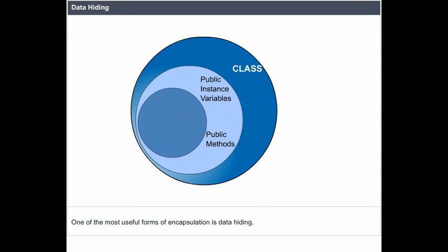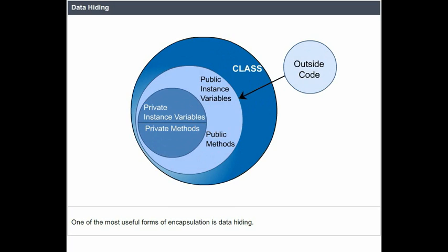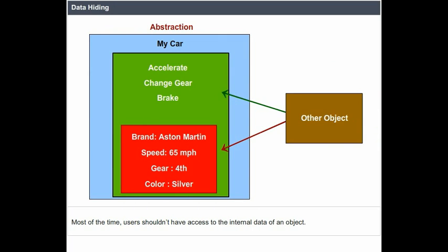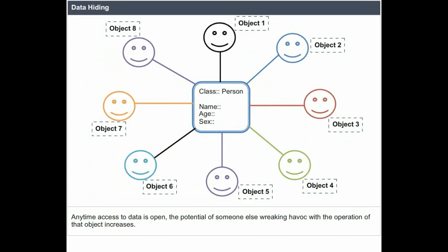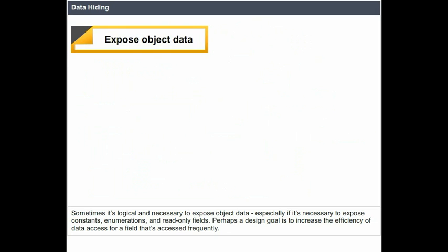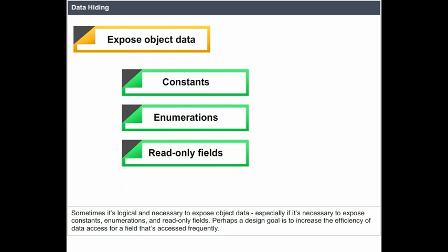One of the most useful forms of encapsulation is data hiding. Most of the time, users shouldn't have access to the internal data of an object. Data represents the state of an object, and an object normally has full control of its own state to ensure consistency. Any time access to data is open, the potential of someone else wreaking havoc with the operation of that object increases. Sometimes it's logical and necessary to expose object data, especially for constants, enumerations, and read-only fields, or to increase efficiency of data access for a frequently accessed field.